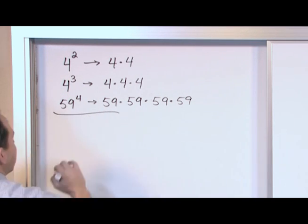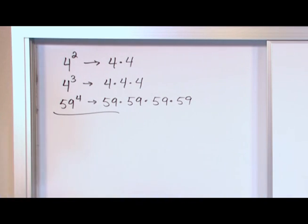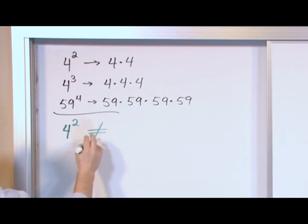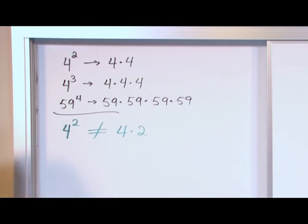One thing you must make sure that you do not get into the trap of is making the following mistake. Do not make the following mistake. Four squared, for instance, is not, that means not equal to, four times two. A lot of students will look at these numbers and say, well, four times two, that's eight. Well, that's wrong.